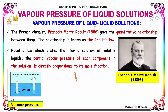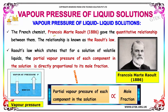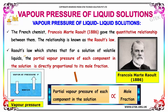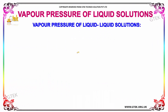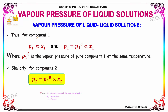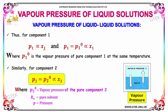These partial pressures are related to the mole fractions x1 and x2 of the two components respectively. The French chemist François-Marie Raoult gave the quantitative relationship between them, known as Raoult's Law, which states that for a solution of volatile liquids, the partial vapor pressure of each component is directly proportional to its mole fraction. Thus, P1 = P1° × x1 and P2 = P2° × x2, where P1° is the vapor pressure of pure component 1 at the same temperature.